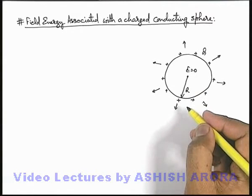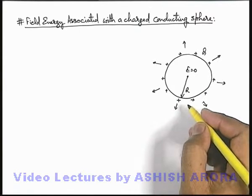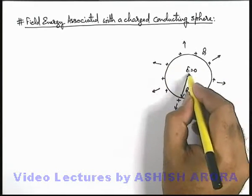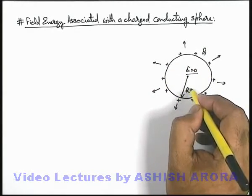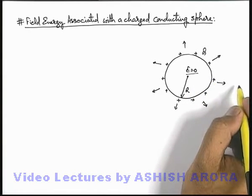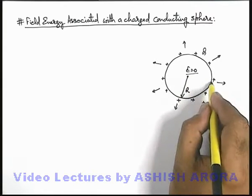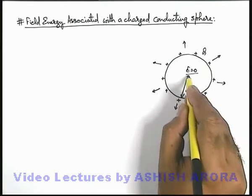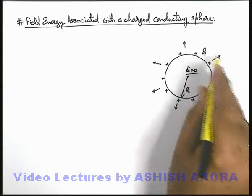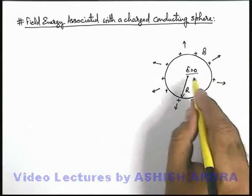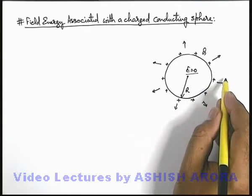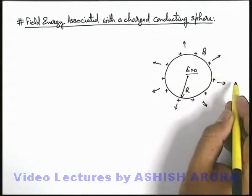In this situation, the field energy associated within the volume of this conducting sphere is zero, since the field is zero inside. Field energy will exist only from its surface to infinity. We know that the electric field varies as kq/x² in the outer region. To find the field energy outside the metal sphere, we integrate the field energy from its surface to infinity, since E is varying.